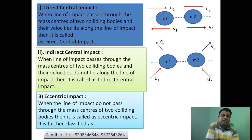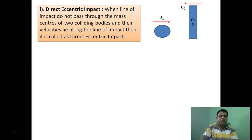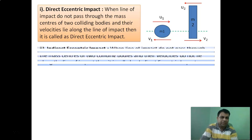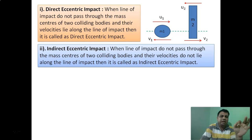If the line of impact does not pass through both mass centers, that is called eccentric impact. Eccentric impact also has two categories: direct eccentric and indirect eccentric. For example, the collision between a bat and a ball — both have different mass centers but the velocity is along the line of impact (parallel to it) — so that is direct eccentric impact. The line of impact does not pass through both mass centers.